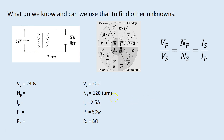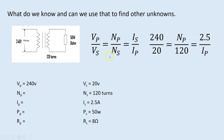We've completely solved all our unknowns on the secondary winding. Now we need to start concentrating on the primary winding. At the moment we've only got 240 volts on the primary. We can't use our formula wheel yet, so we're going to have to use the transformer equation formula.